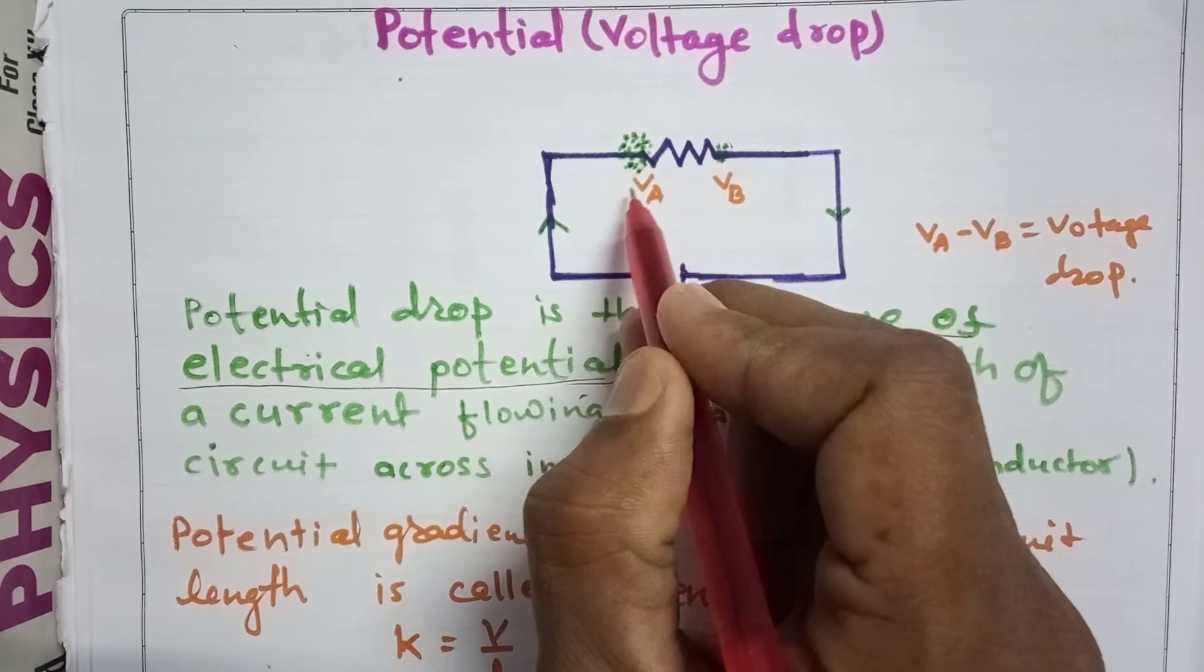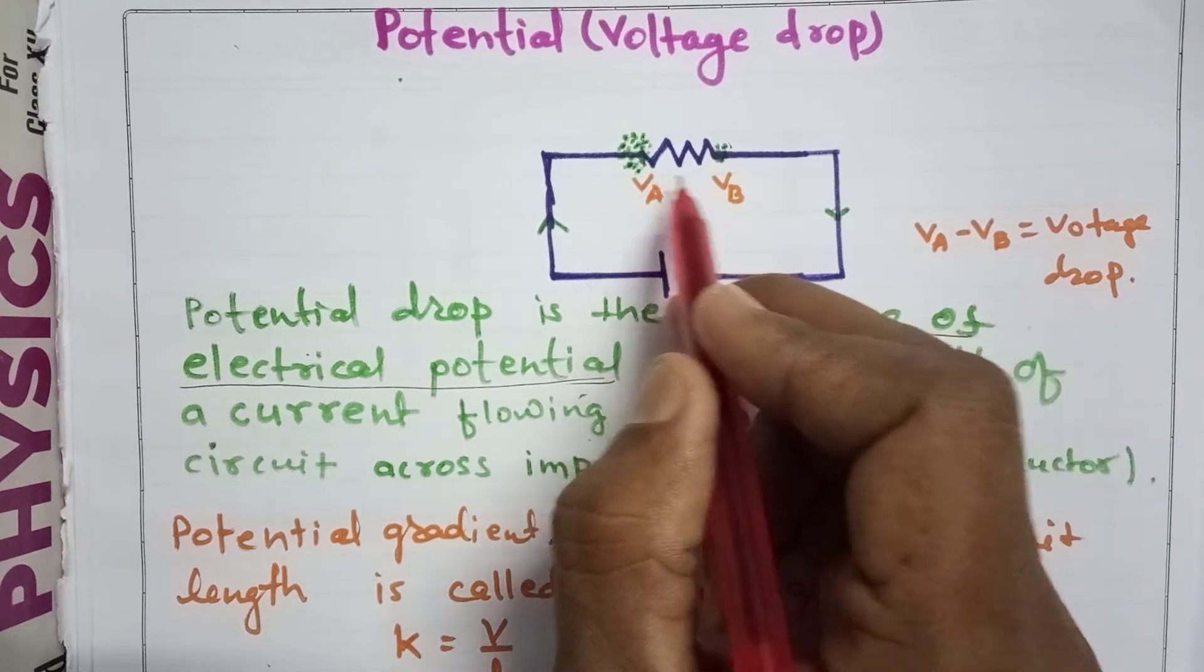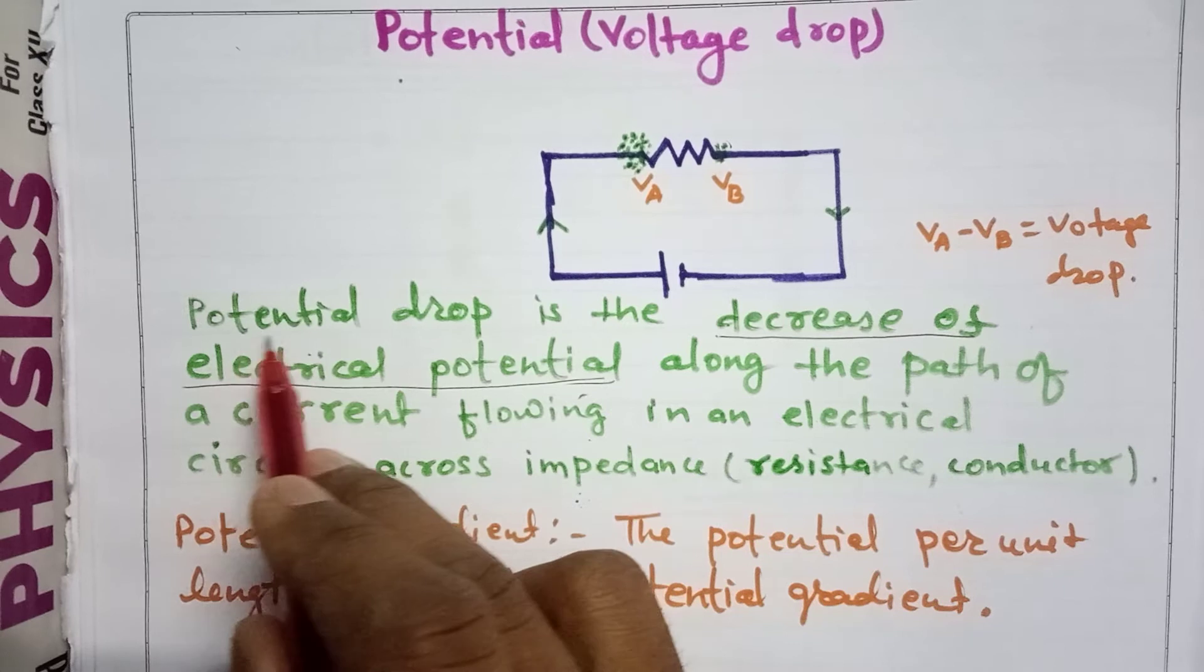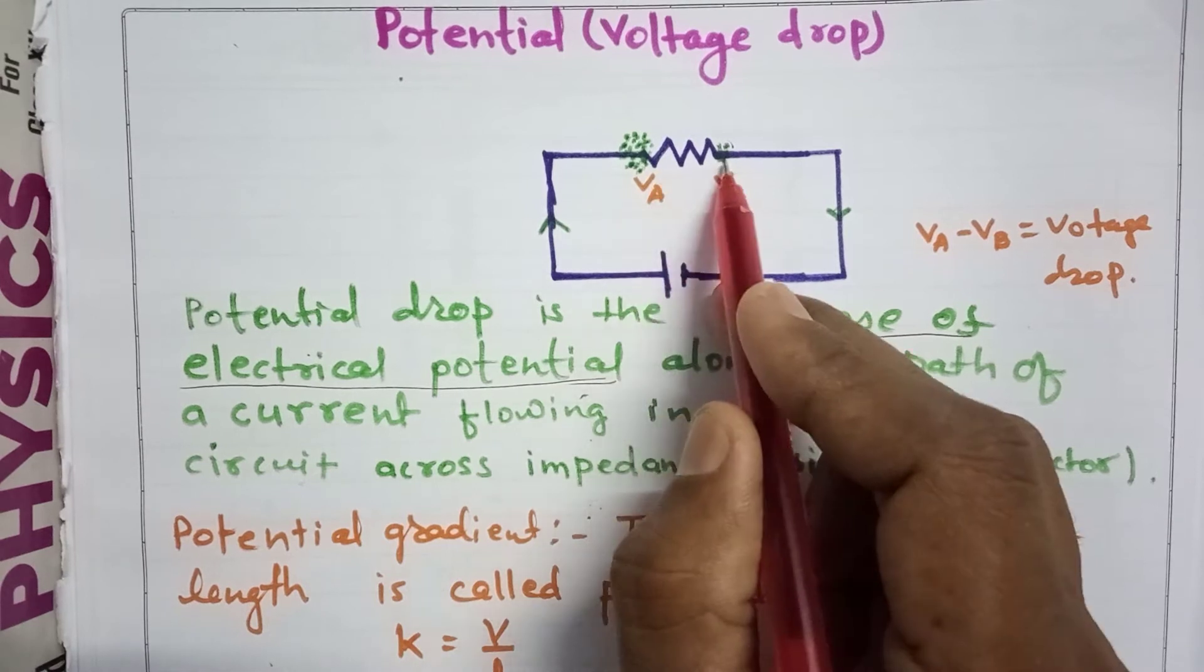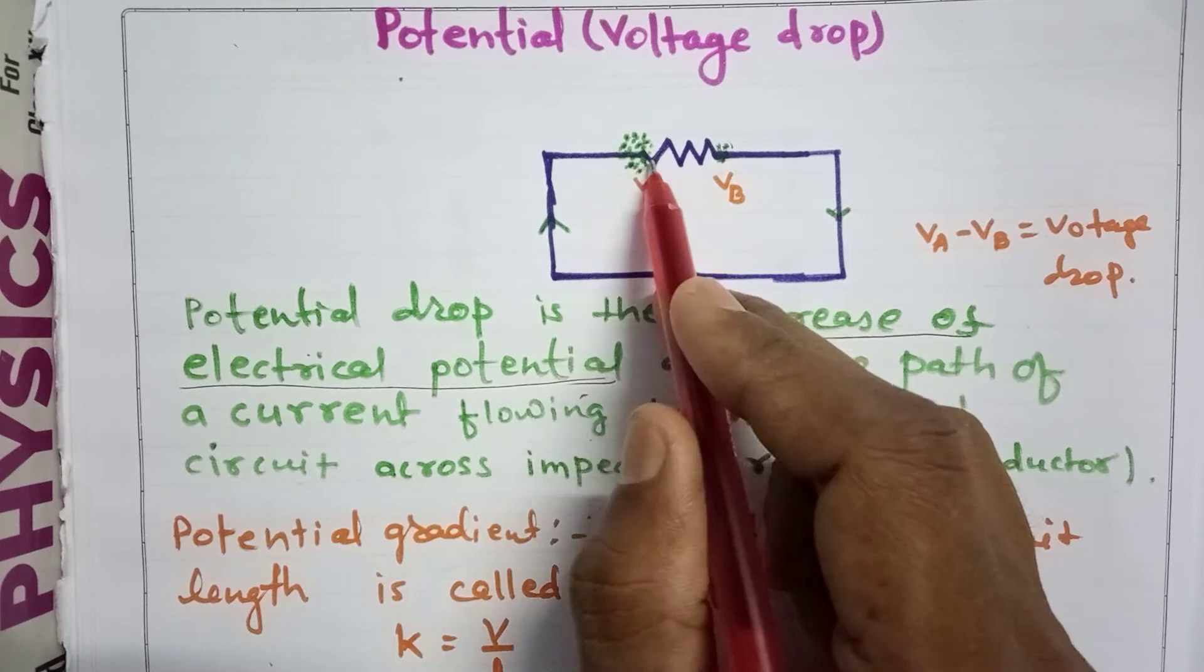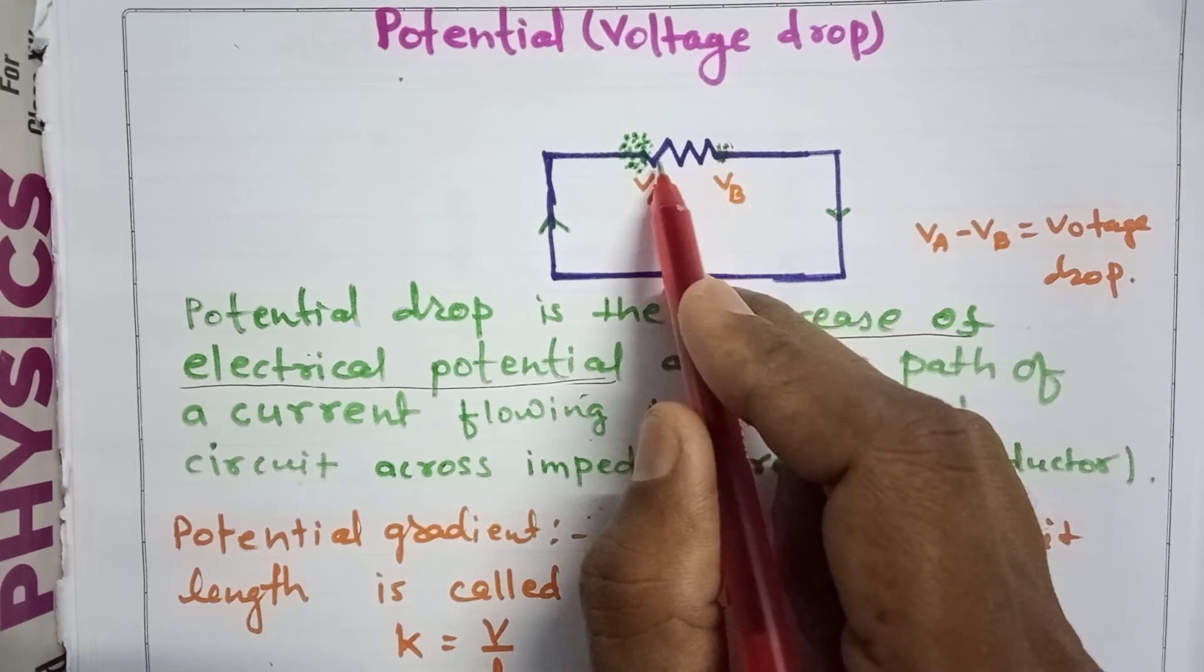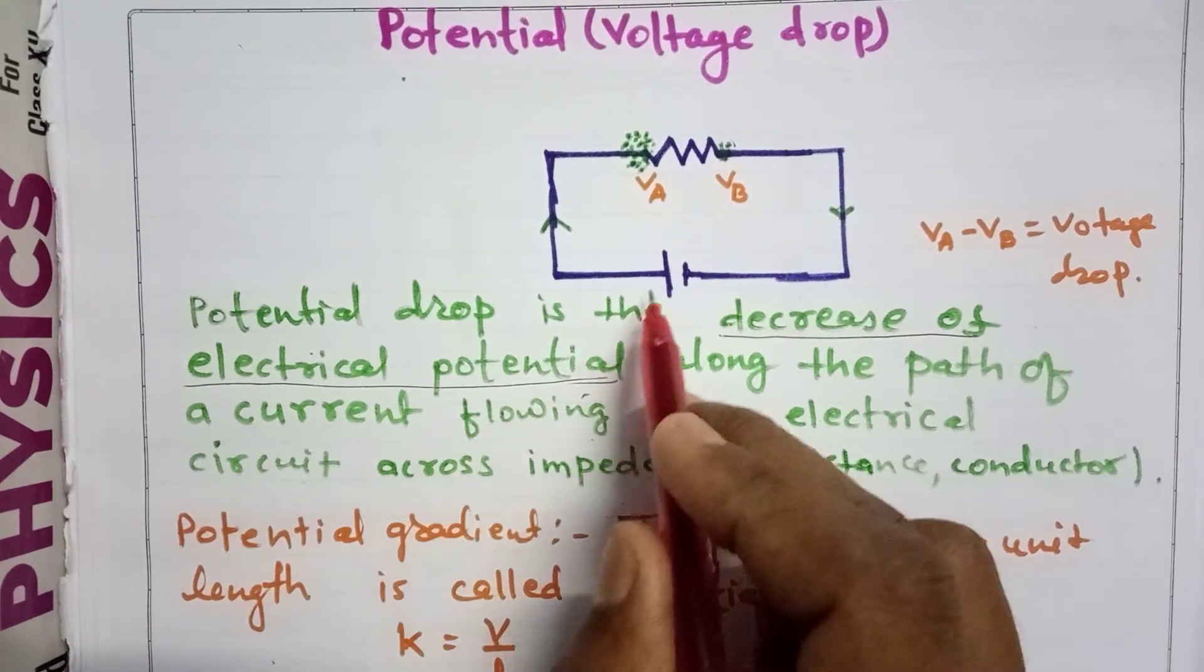Suppose you have a potential here and a potential here. The difference between these potentials is called potential drop or voltage drop. So potential drop is the decrease of electrical potential along the path of current.